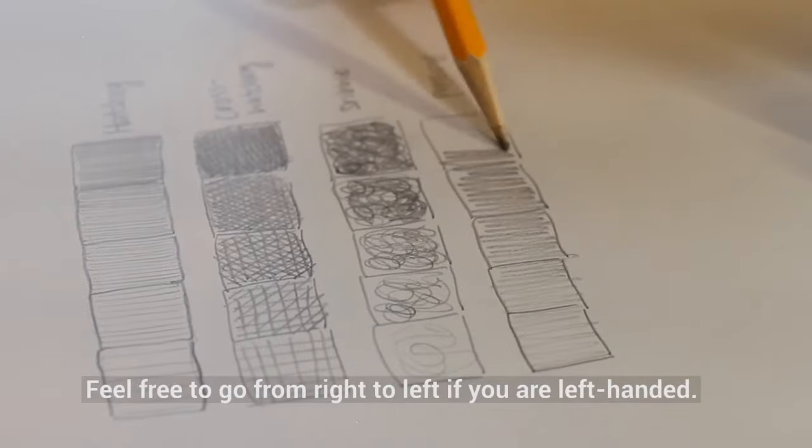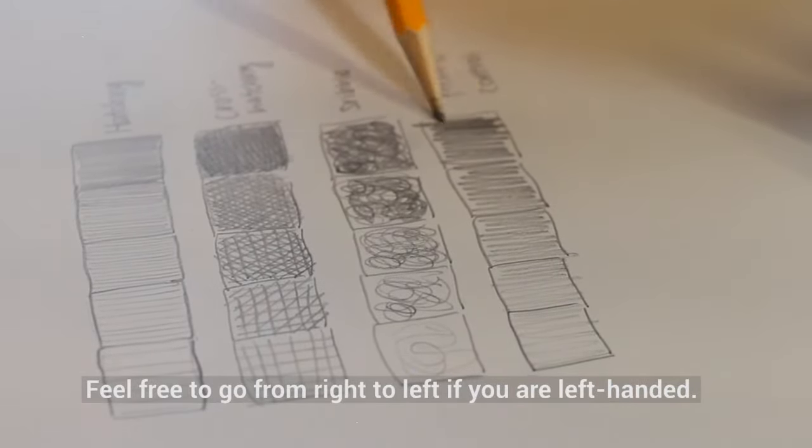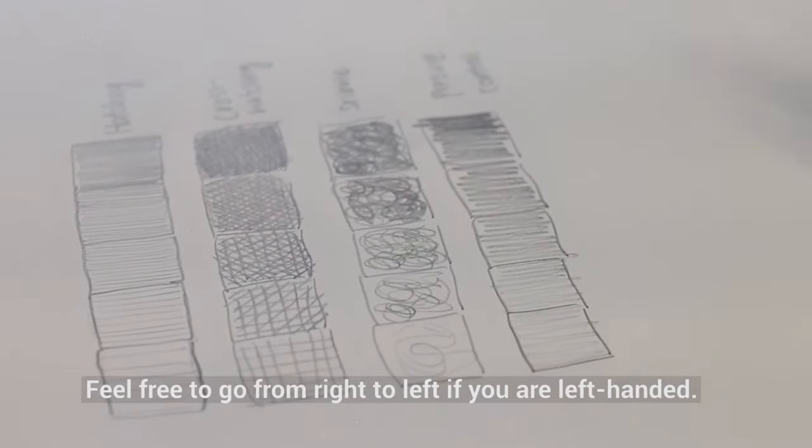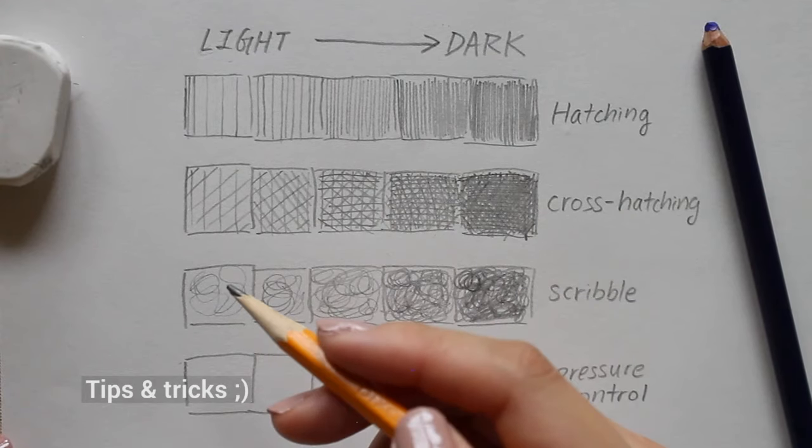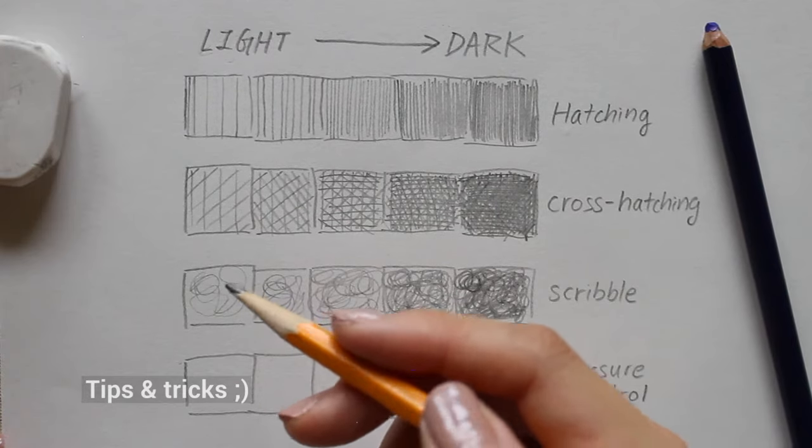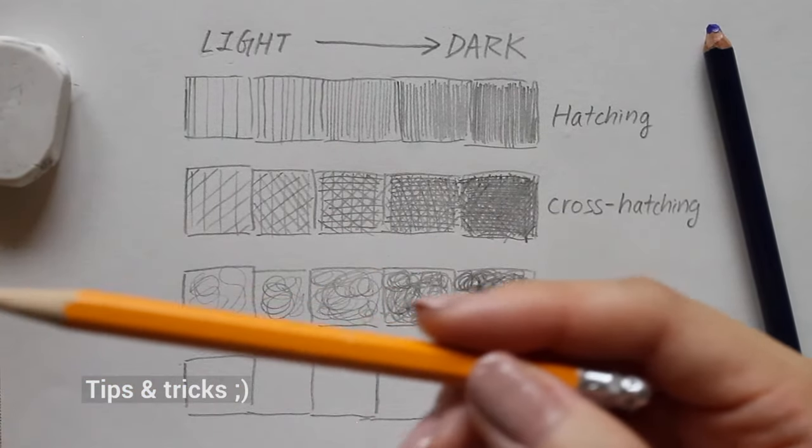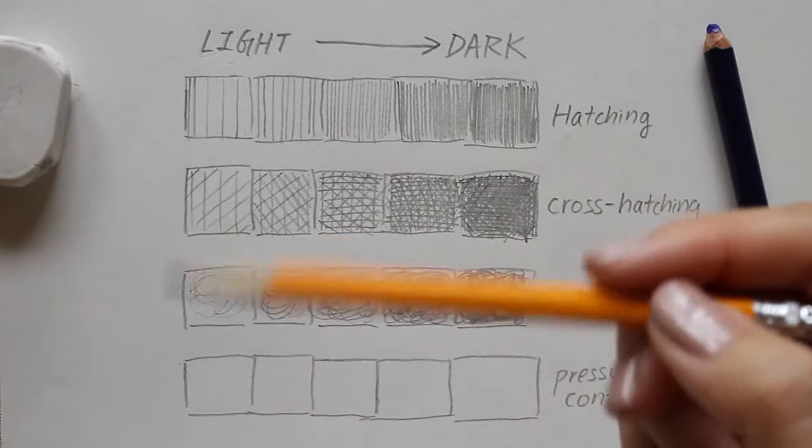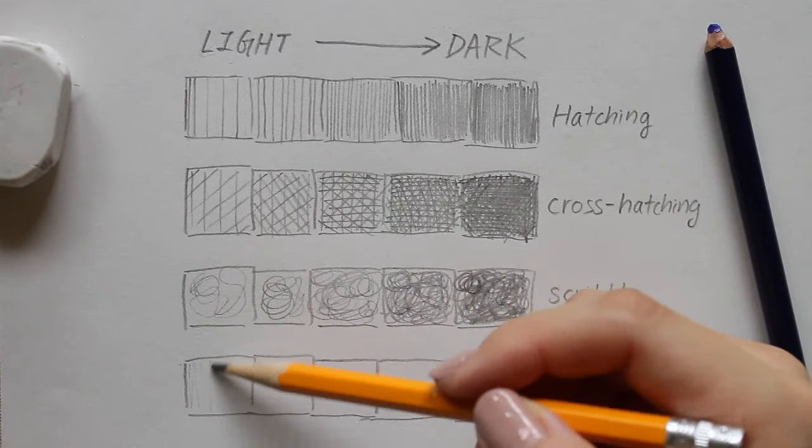Now I have a gradient of light to dark. If you find yourself struggling with drawing lightly, you can try holding your pencil farther away from the tip. This allows you to naturally draw lighter.